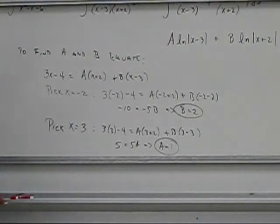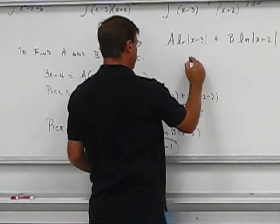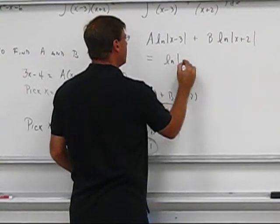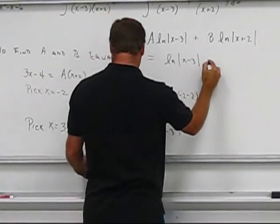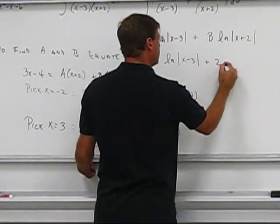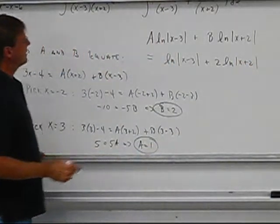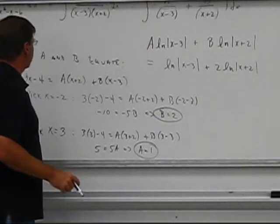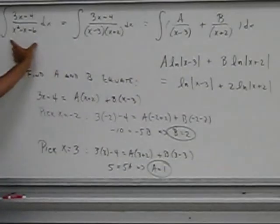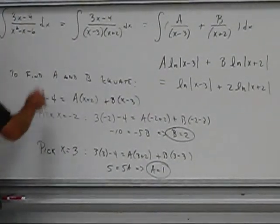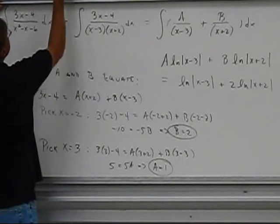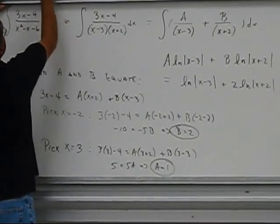So I've found a and b, so it turns out that this here is ln x minus 3 plus 2 ln x plus 2. Okay, so that's the solution to this integral here.